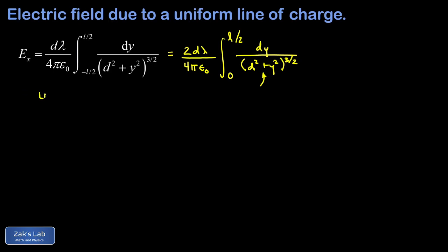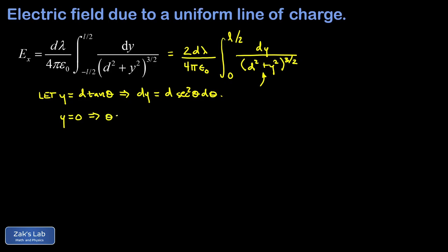The motivation for the trig substitution is to simplify the expression d squared plus y squared in the denominator using the identity 1 plus tan squared equals sec squared. We let y equal d times tan theta, so dy equals d times sec squared theta d theta. We also transform the limits: when y equals 0, theta equals 0; when y equals l over 2, theta equals the inverse tangent of l over 2d.